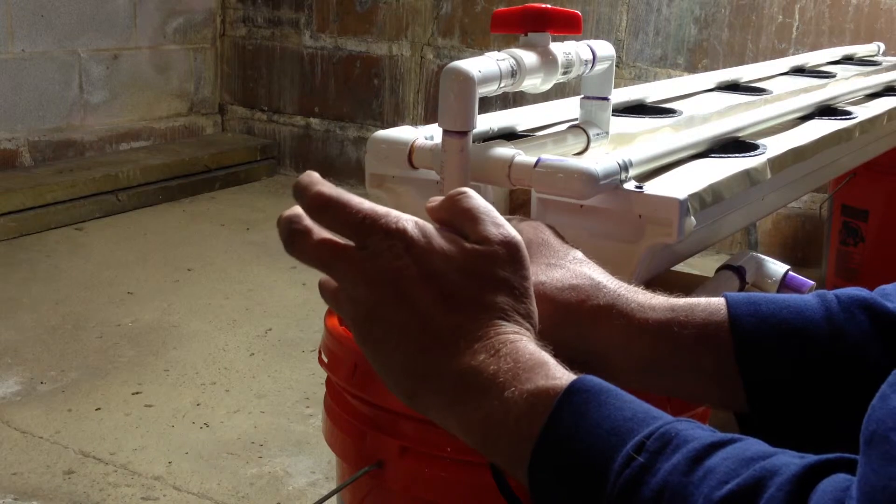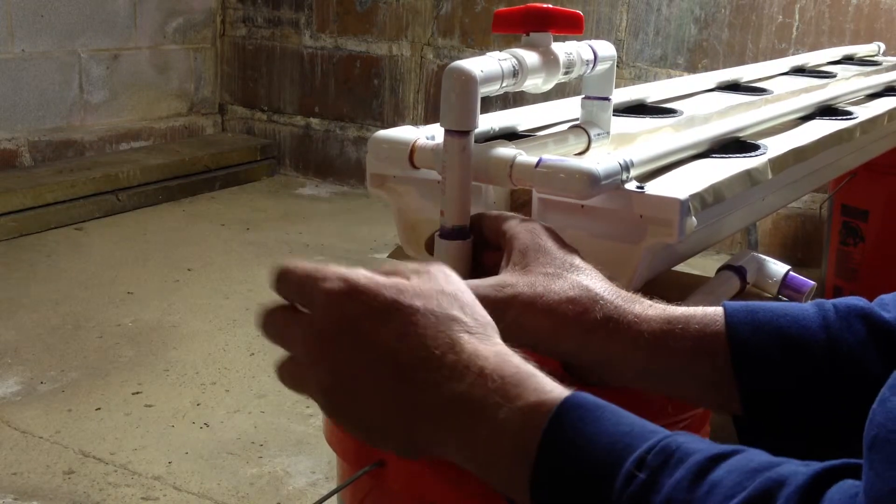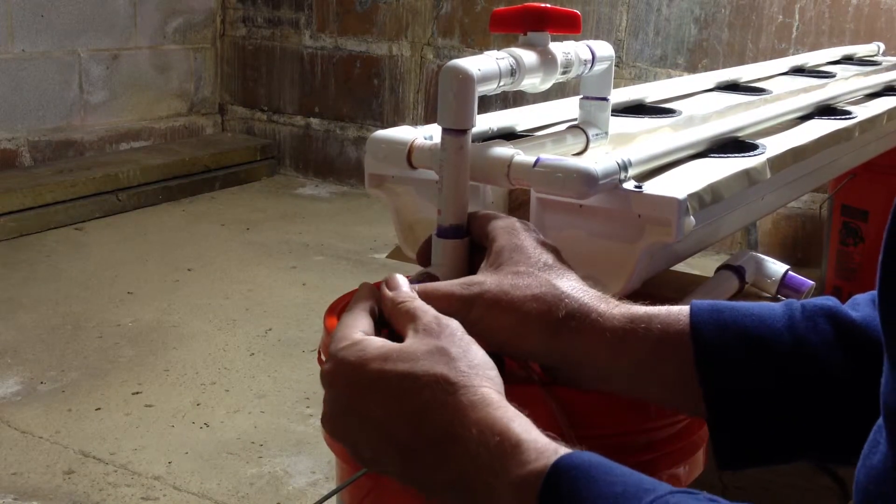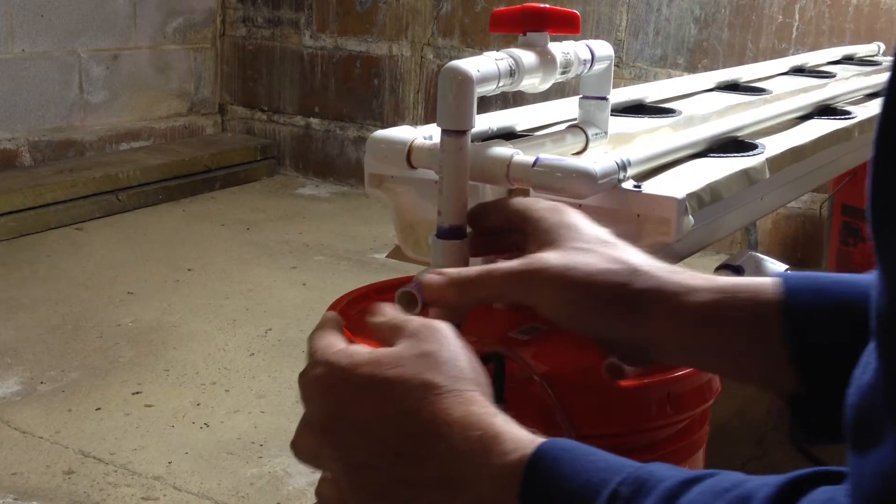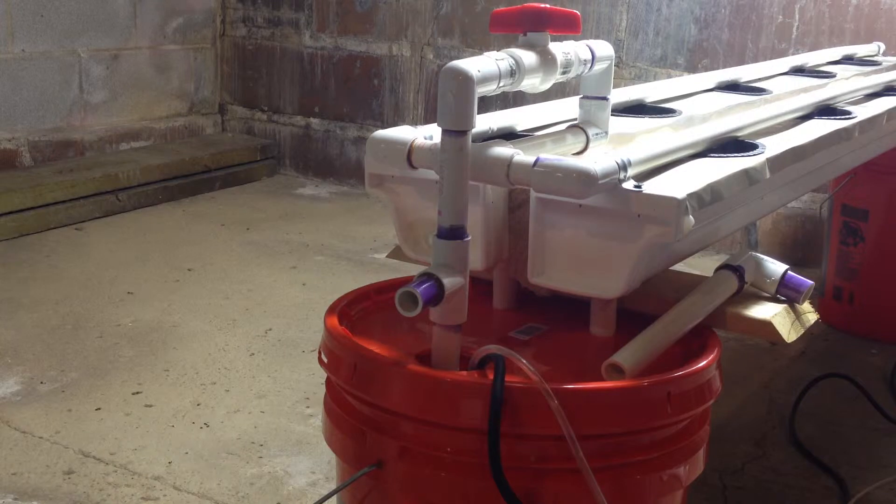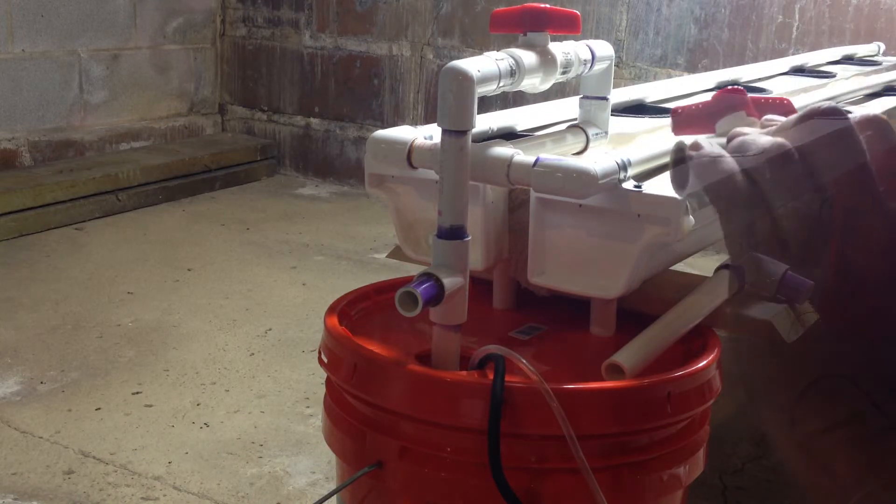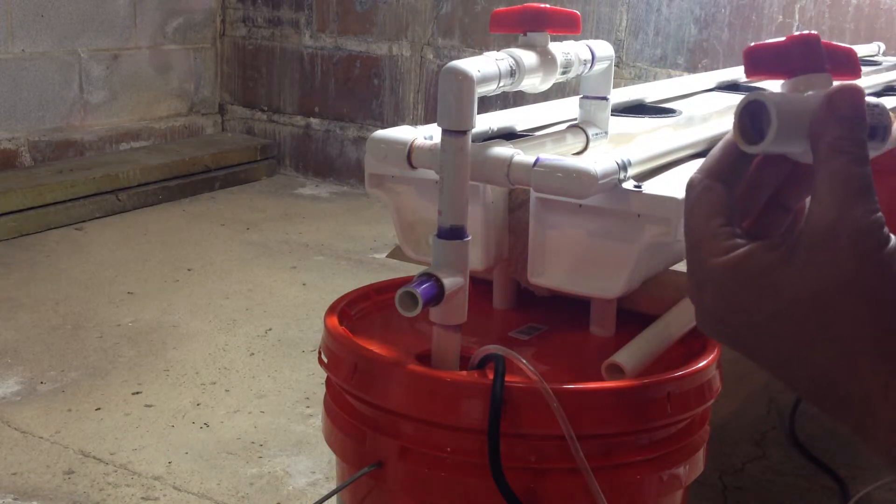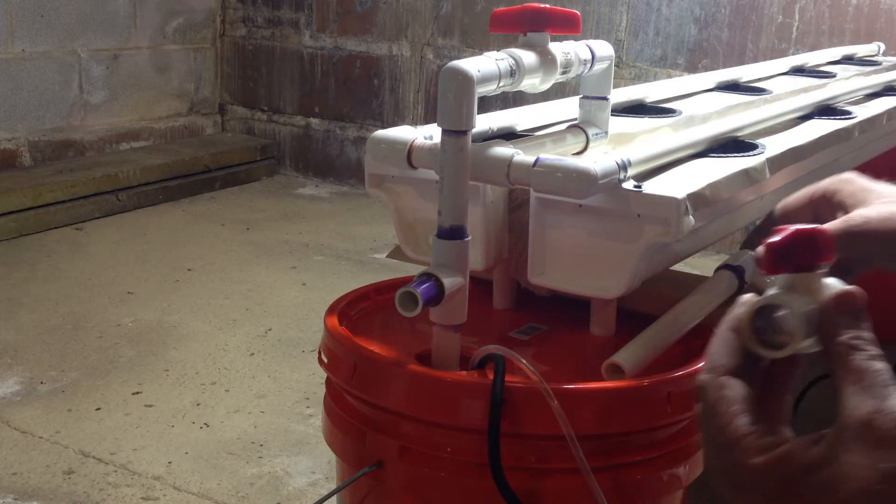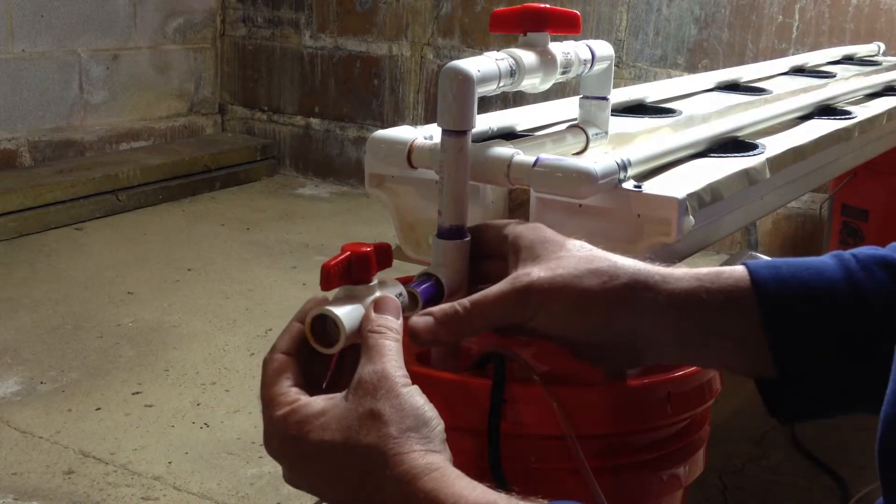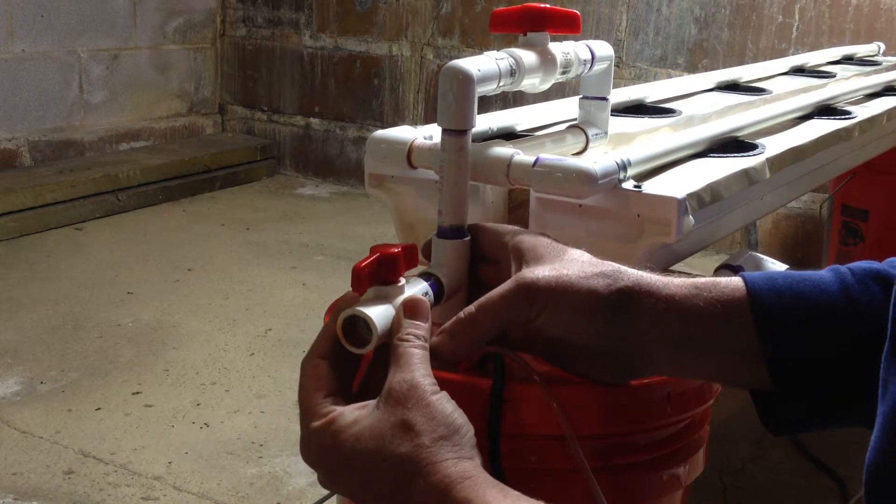The next step is to attach the ball valve. I do this by using a small piece of PVC into the T, and then I'll glue the ball valve onto that. Then I have another connector that we'll glue into the other side which goes straight down. This is a drain that goes down into the bucket.